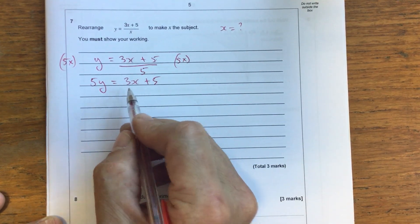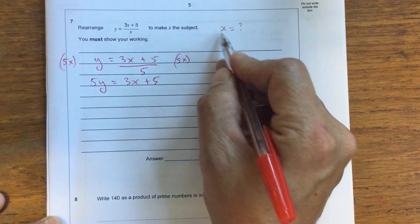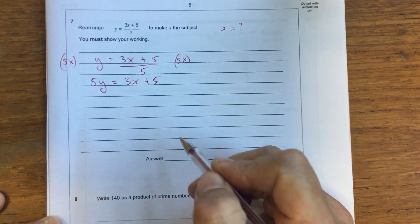Okay, so we're getting close now. We've got a much more simple equation to work with, but we still haven't got x by itself on one side of the equal sign.